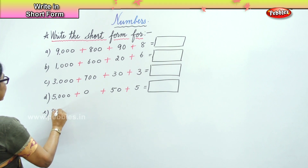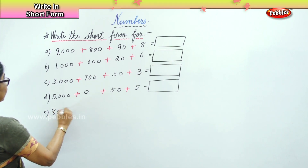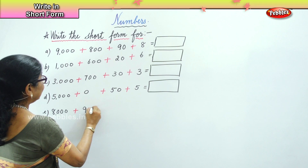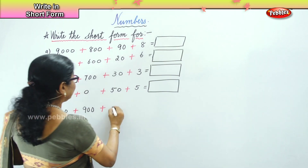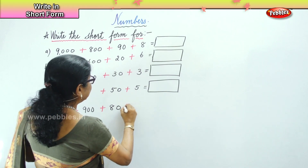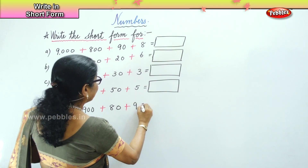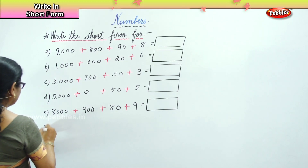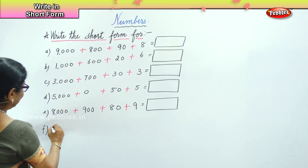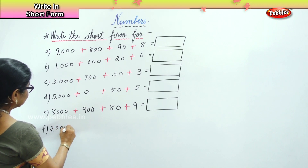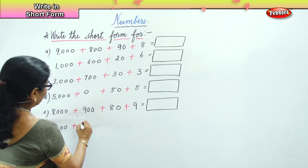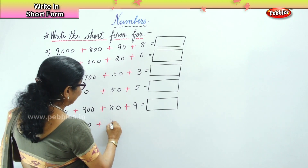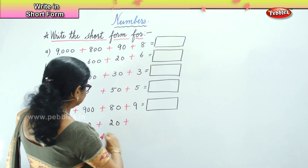9000 plus nine hundred, plus eighty, plus nine. Then two thousand, plus four hundred, plus twenty, plus four.